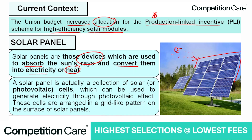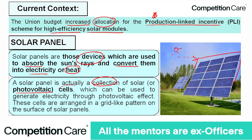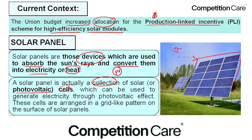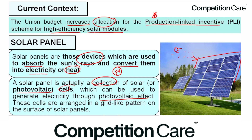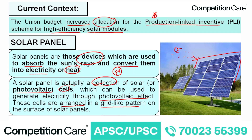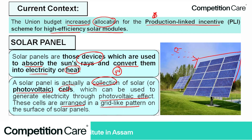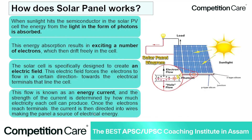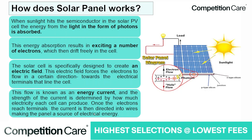A solar panel is actually a collection of solar or photovoltaic (PV) cells, which can be used to generate electricity through the photovoltaic effect. These cells are arranged in a grid-like pattern on the surface of the solar panels. Let's see how a solar panel works.